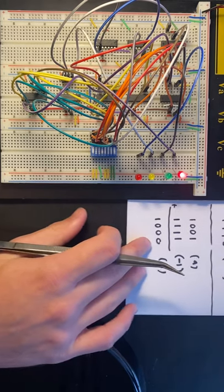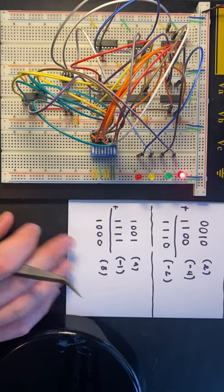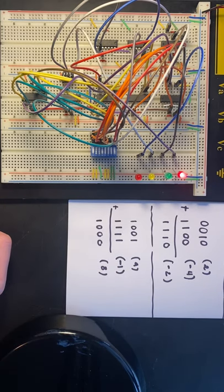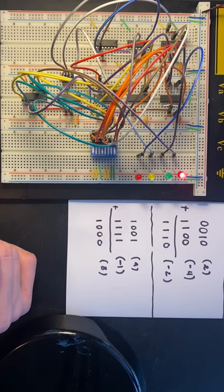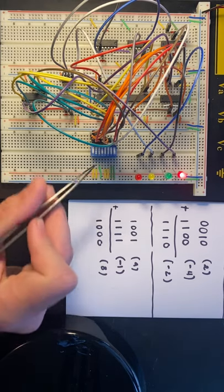Moving on to another operation, let's say we want to do 0010, which is two, plus negative four, which is 1100. We can follow the same approach and start with the number on top with this switch right here.